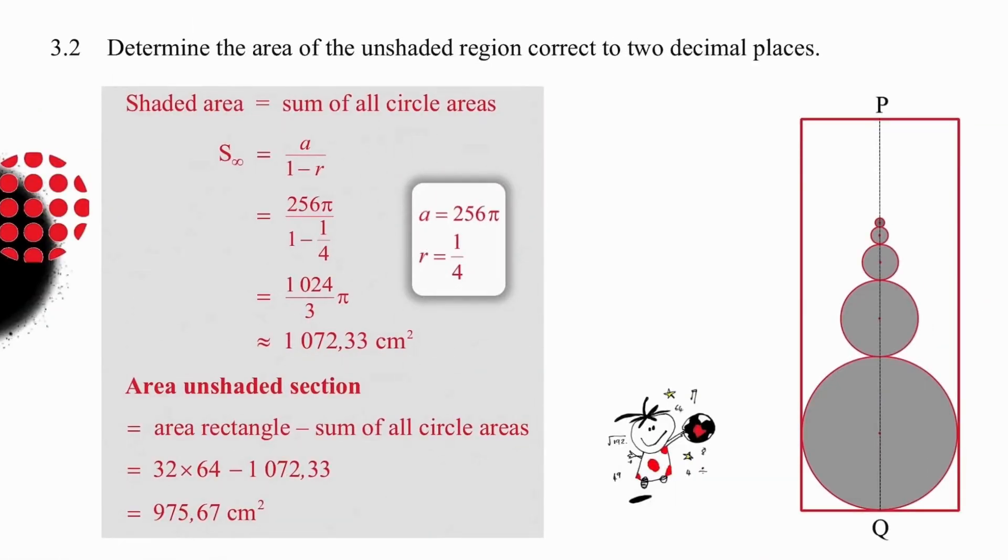Okay, so we've already worked out the area of the circle in question 3.1. We know that the area of the large circle is 256 pi, and we were told that the relationship between the areas of the circles was a quarter. So we can use the sum to infinity and work out that the sum of all the areas will total 1024 over 3 times pi. If we work that out, correct to two decimal places, we get 1072.33 centimeters squared. That is the area of all of the shaded circles. To work out the unshaded section, we simply need to take the area of the rectangle, which is 32 by 64, and subtract the sum of all the circle areas, which we said was 1072.33, and that will give us 975.67 centimeters squared.